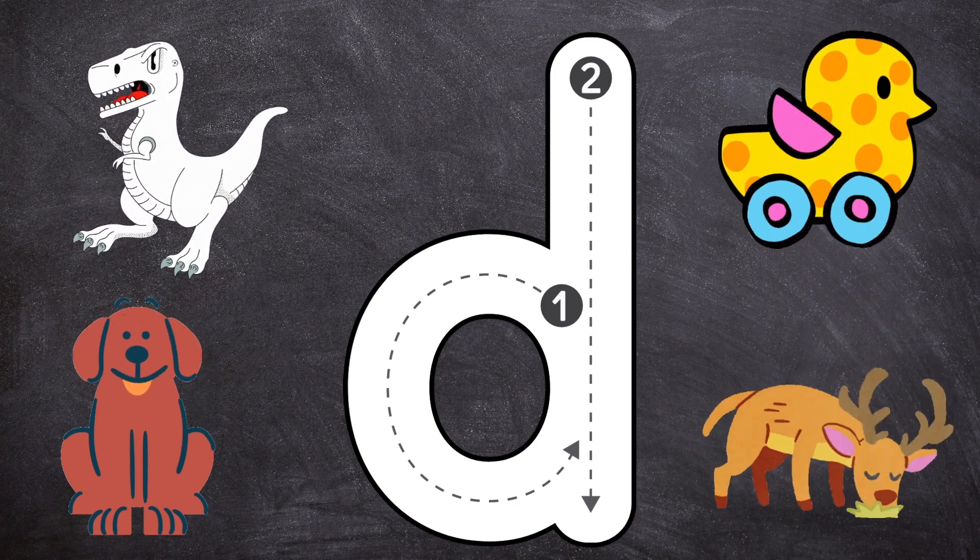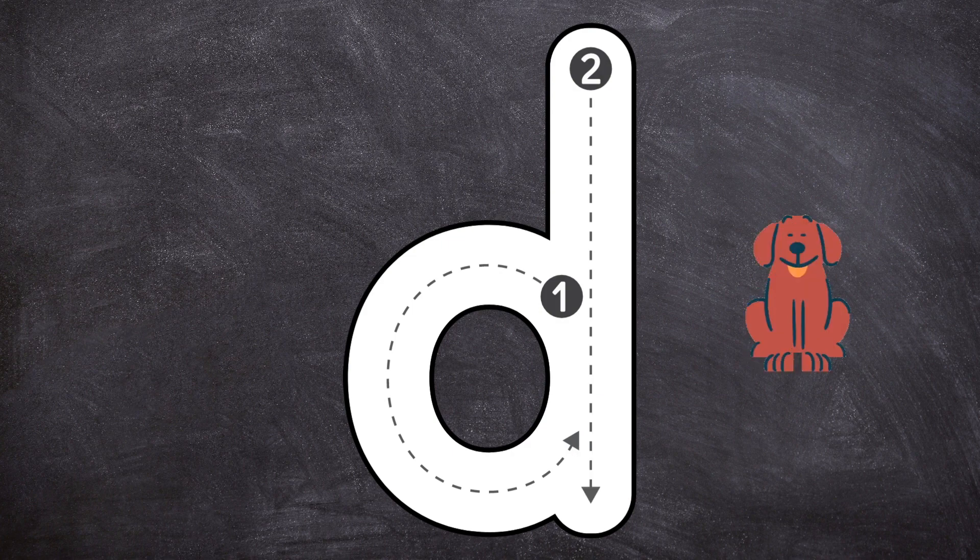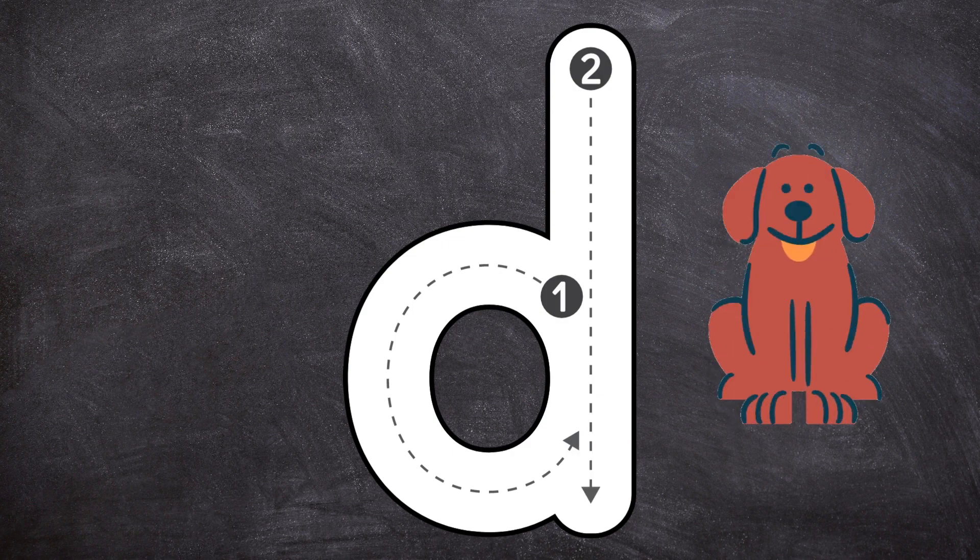Let's trace lowercase d. Pull back, curve around, move up to the top, and straight down. D, D, dog.